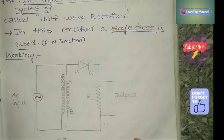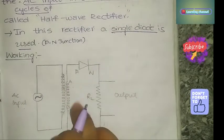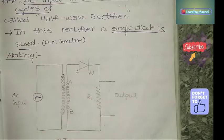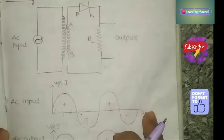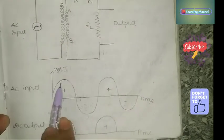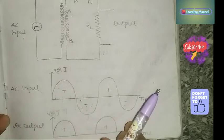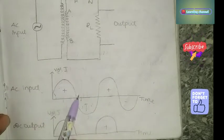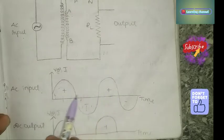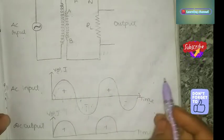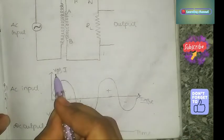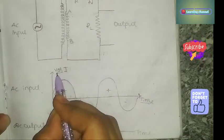Draw the circuit diagram neatly and mark the polarities. Next, draw the wave diagrams. The AC input waveform alternates with time — one half positive and one half negative — so the wave changes with time. The Y-axis represents voltage or current (V or I) and the X-axis represents time.